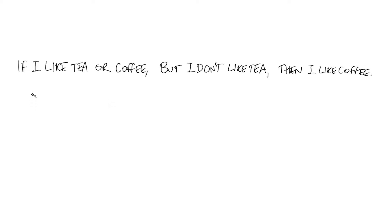I have a sentence here which says: if I like tea or coffee, but I don't like tea, then I like coffee. What I want to do with this sentence is represent it as a propositional formula using variables like P and Q, and using operations like and, or, not, implies, and so on.